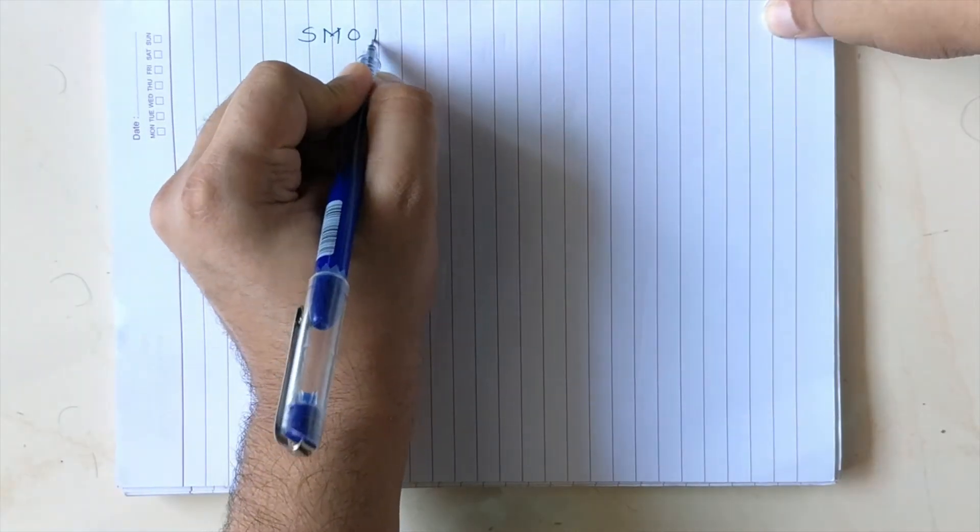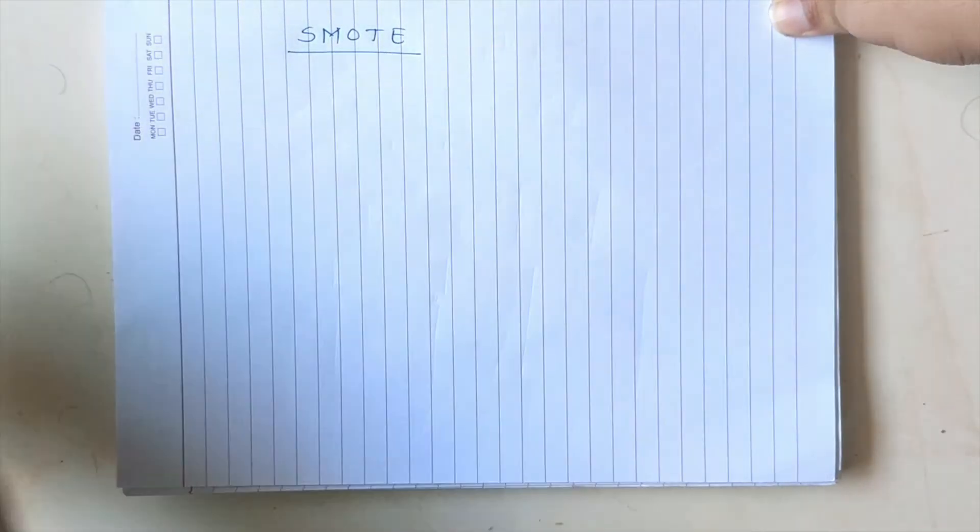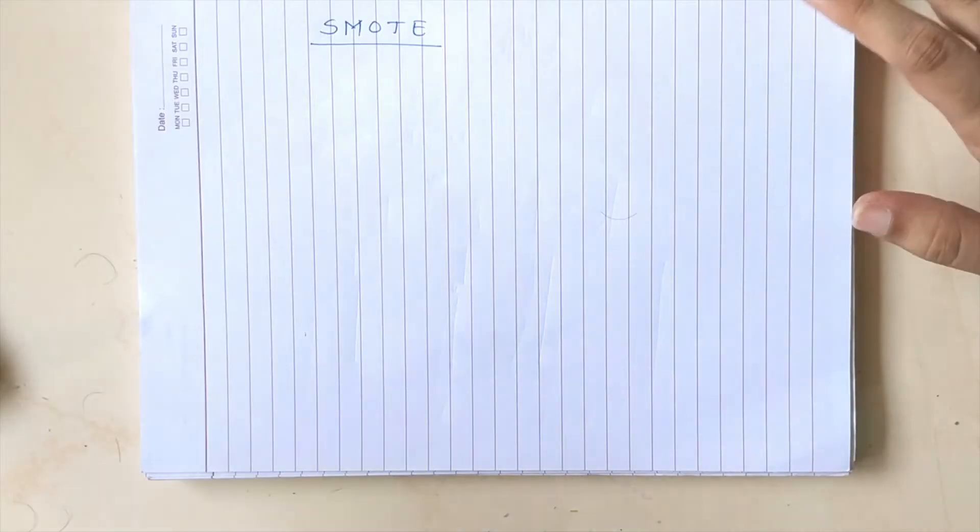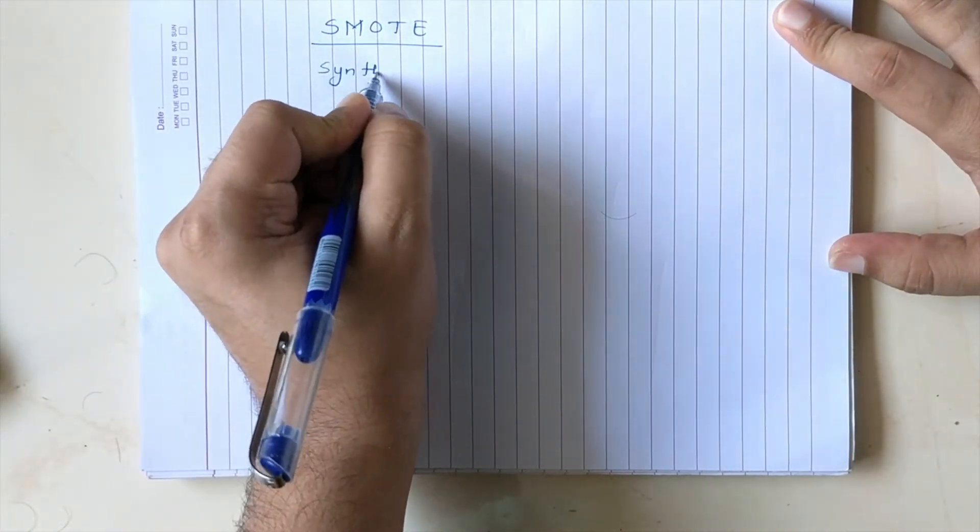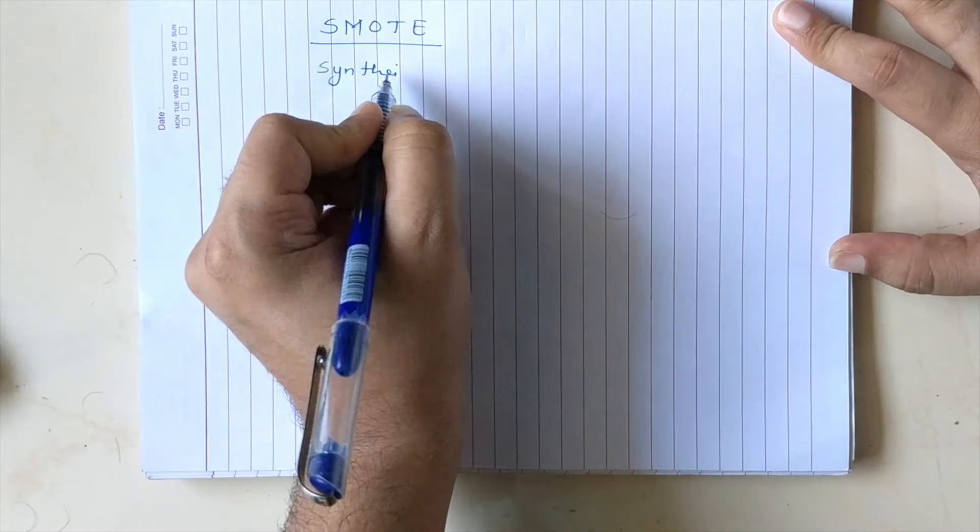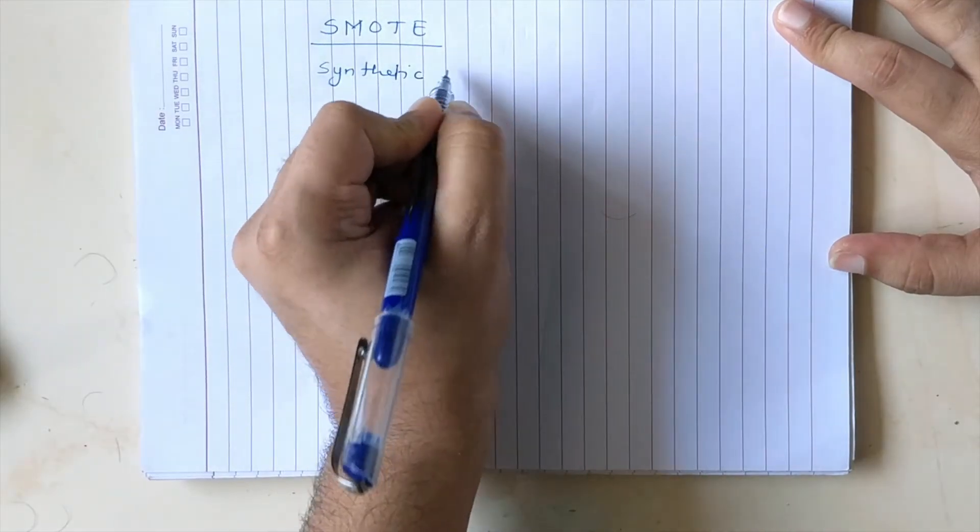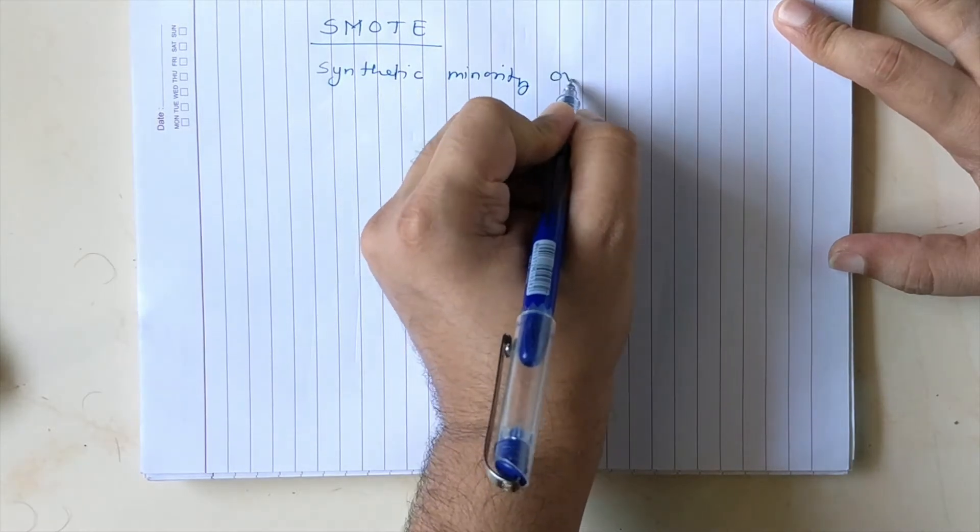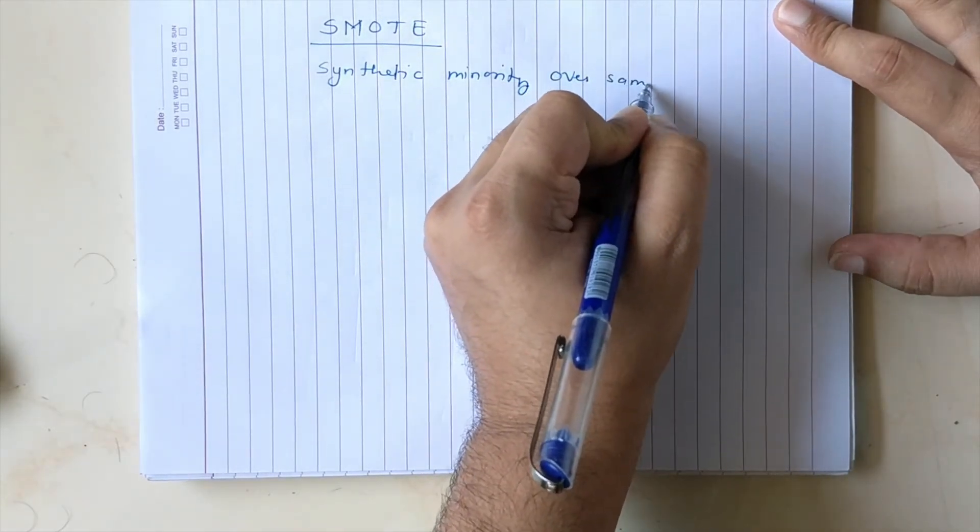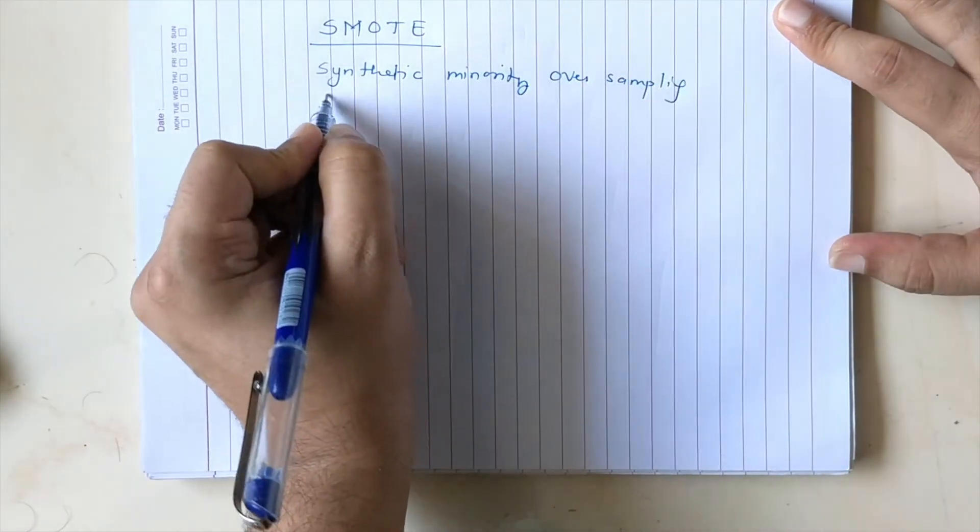Now in comes the next method which is called as SMOTE. So the full form of SMOTE is synthetic minority oversampling technique.